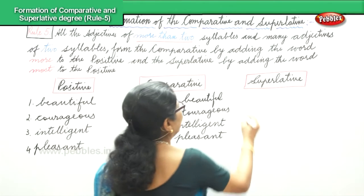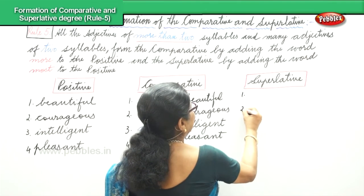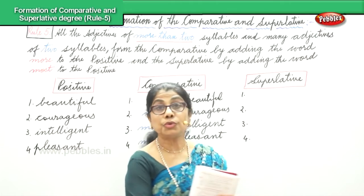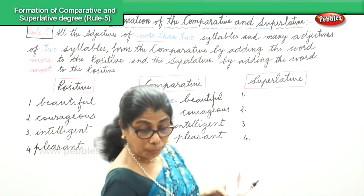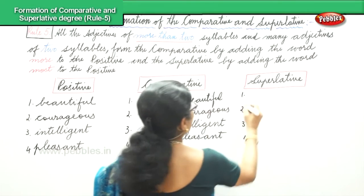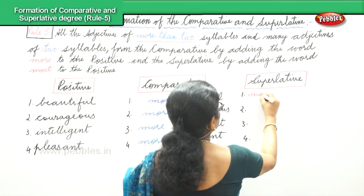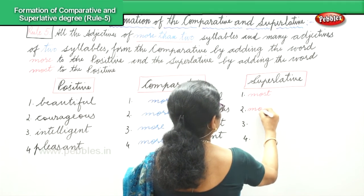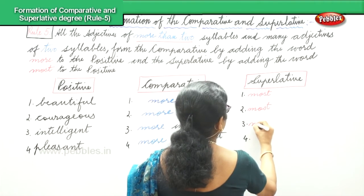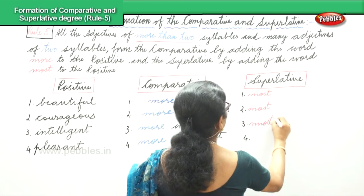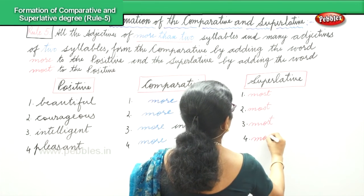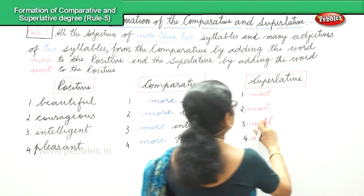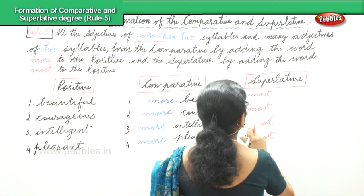Now let's form the superlative. 'Most' is added to form the superlative. Where you used 'more', you will now say 'most'. So: most beautiful, most courageous, most intelligent, and most pleasant. For everything, you add 'most'.